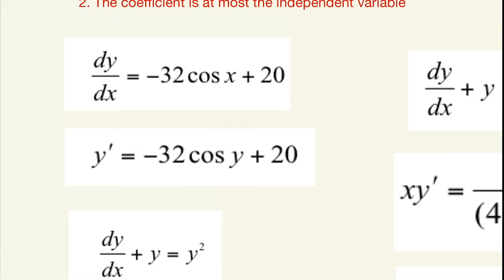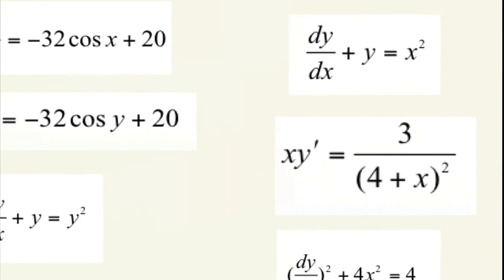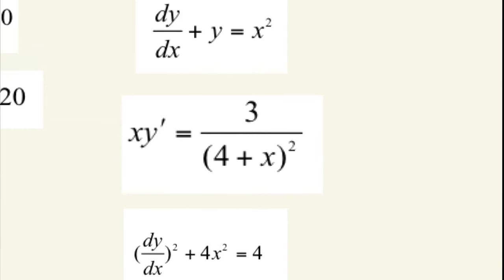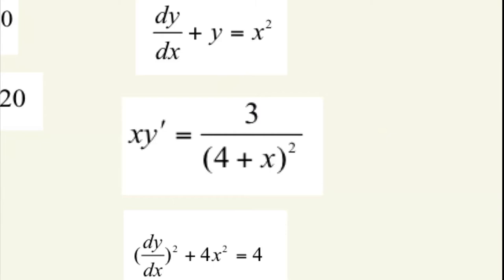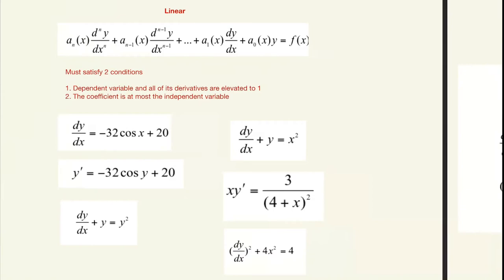In the second example, the derivative of y equals cosine of y — that cosine of y makes it non-linear, as cosine is not a line. Here we have y squared, which also makes it non-linear. In the next example, the derivative is elevated to one and the coefficient is one, so it's linear. Here the coefficient is x and it's elevated to one — linear. In the last case, the derivative is elevated to two, making it a non-linear function.